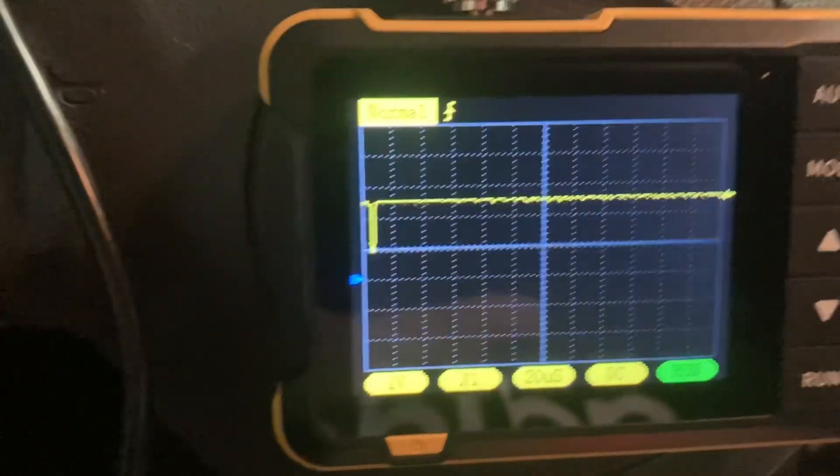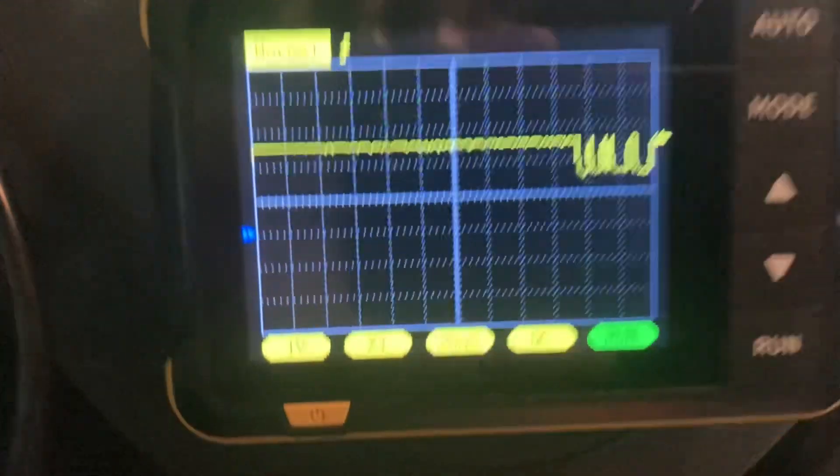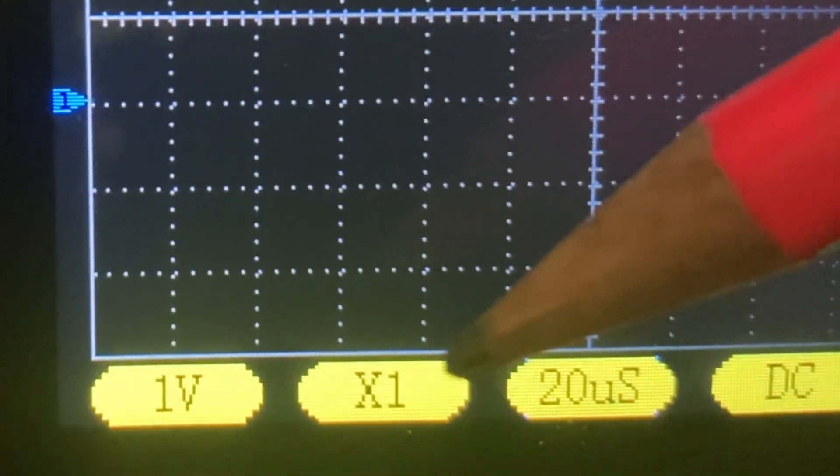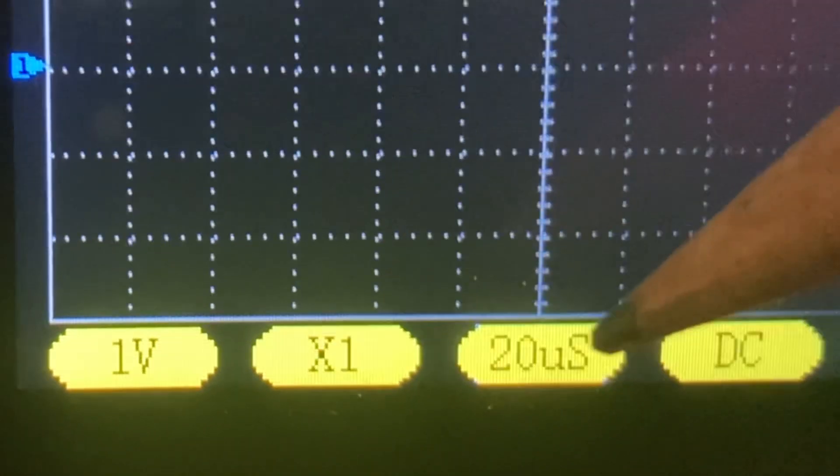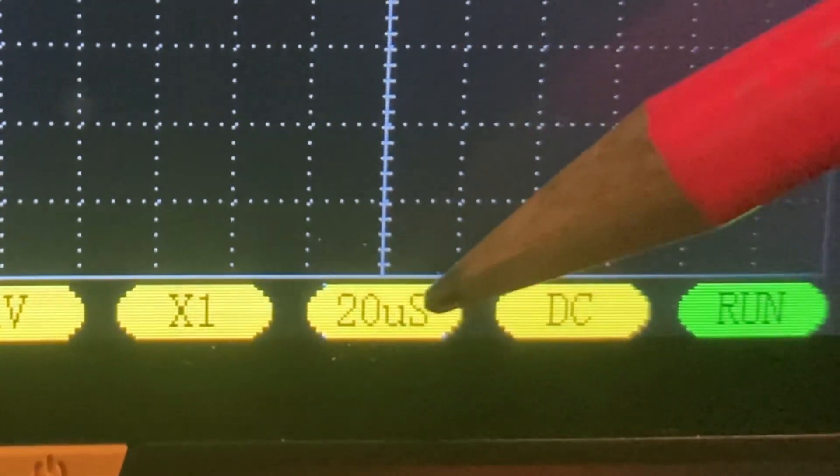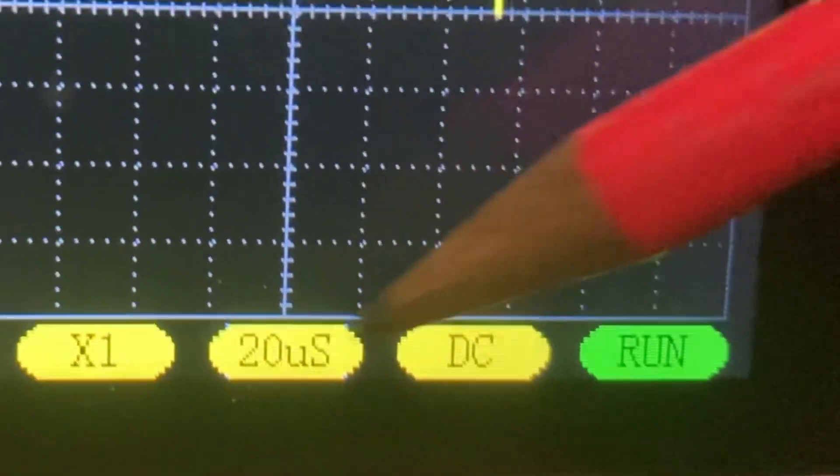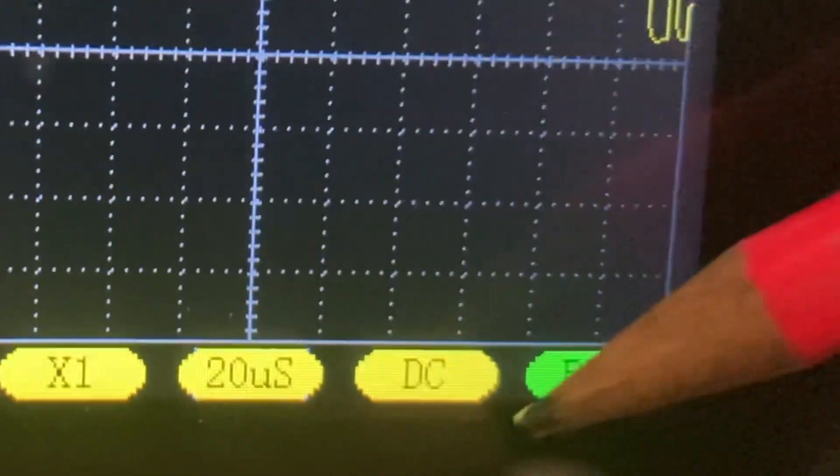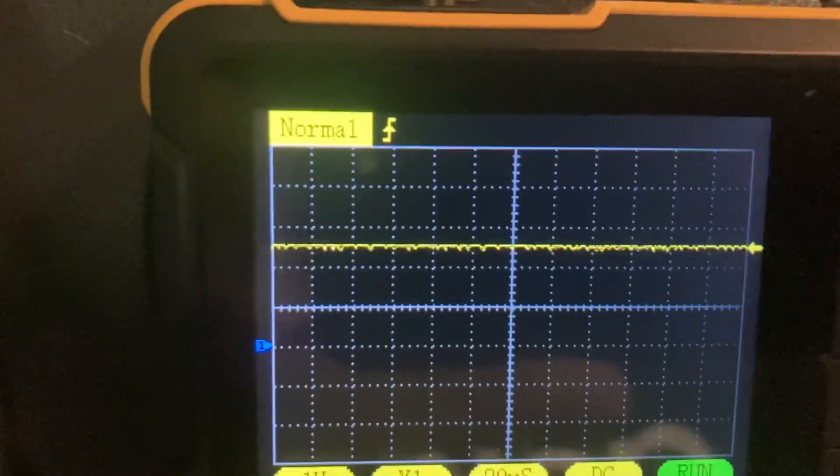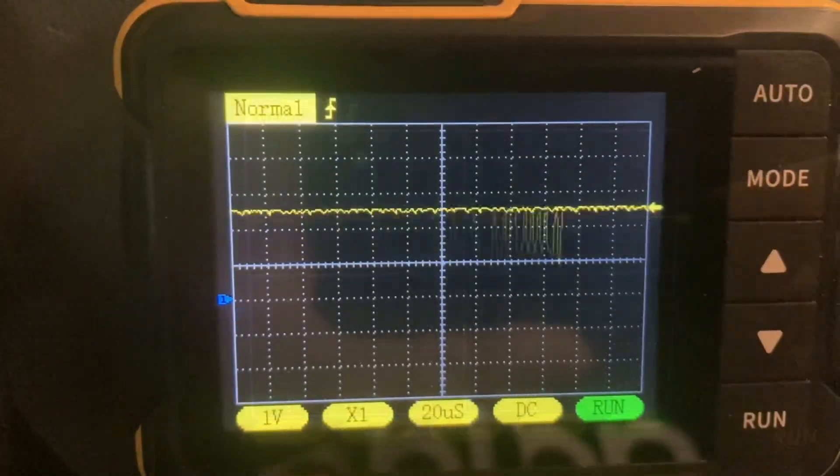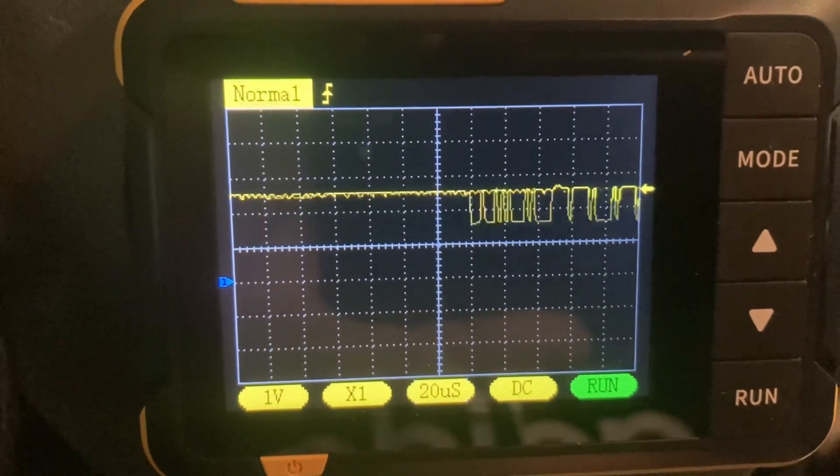On the scope here's what we actually get. What do I have for setup? One volt times one on the attenuation, I have no attenuation. The CAN signal is pretty fast so it's at 20 microseconds time base wise or sweep if you prefer. Make sure your coupling is in DC or you're going to see nothing. I'm in run mode, my trigger is on normal and I've got it set up like this for a reason.